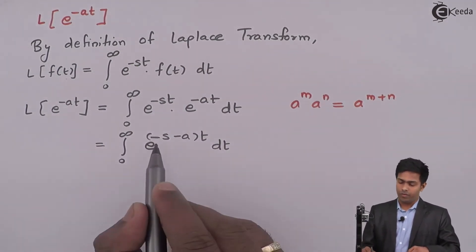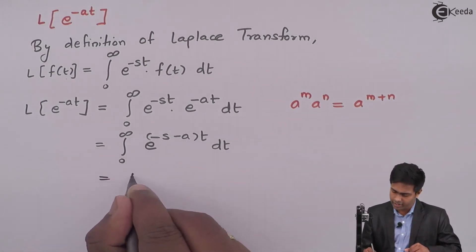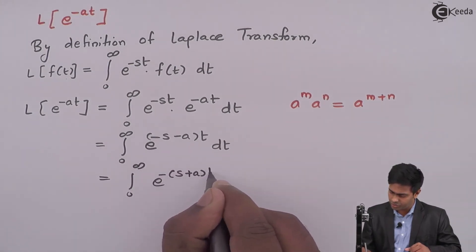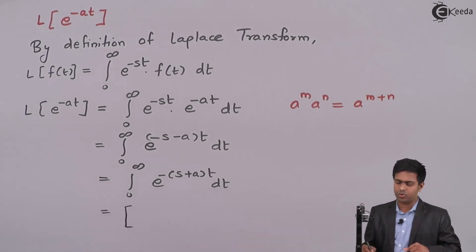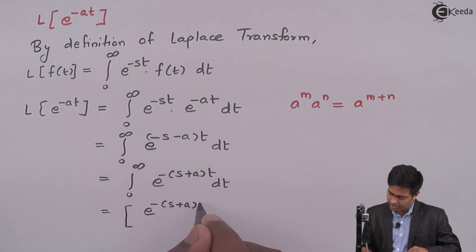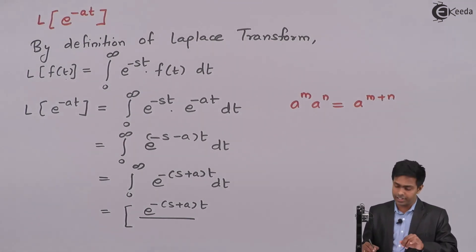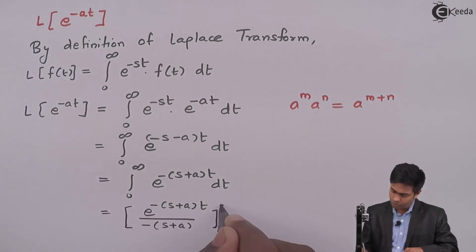From these two terms, I can take minus out. So here we will get integration from 0 to infinity of e raised to minus of s plus a into t, dt. The integration of e raised to minus of s plus a into t is e raised to minus of s plus a into t, upon the derivative of minus of s plus a into t, which is minus of s plus a, evaluated from 0 to infinity.